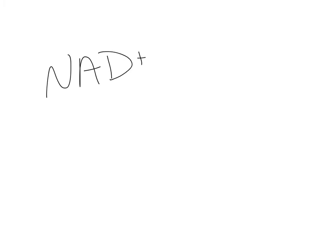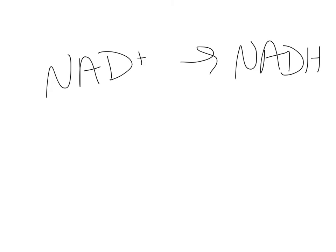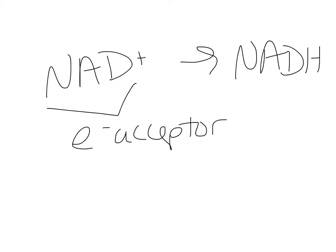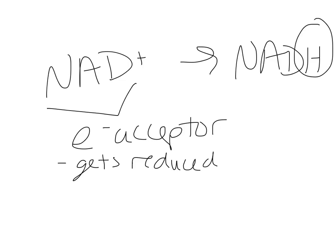Next is the energy harvesting phase, where we get some energy payoff. Those two PGAL molecules are converted into pyruvate. Remember, pyruvate is a three-carbon molecule and PGAL is a three-carbon molecule — we're rearranging things. In this conversion, we get ATP released — two per PGAL molecule. With two PGAL molecules, that's four ATP total.